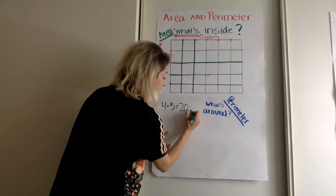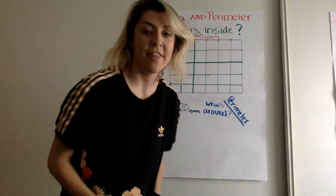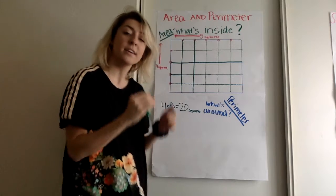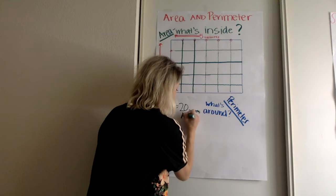So it's 20 squares. And that, ladies and gentlemen, is the area of this quadrilateral. I'm going to write area.